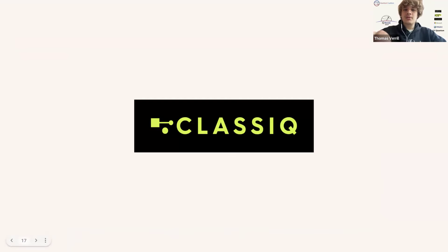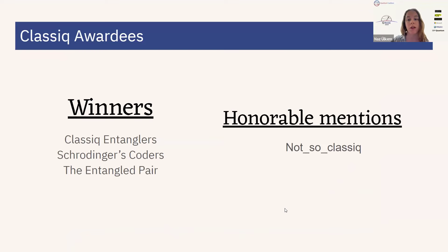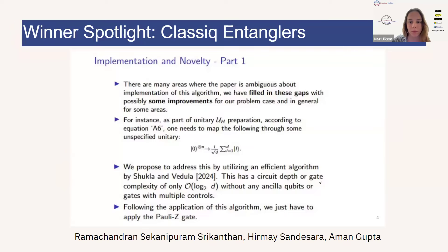Thank you to all the QERA submissions and the participants. Here's Classic. Classic's challenge is for implementing an exponential quantum advantage algorithm. For honorable mentions, we have not-so-classic. And as winners, we have Classic Entanglers, Schrodinger's Decoders, and the Entanglement Pair. This group demonstrated a rigorous understanding of the problem setup and introduced various Hamiltonian simulation techniques, such as Suzuki-Trotter, Q-Drift, and others. Their GitHub was comprehensive, outlining details regarding the explicit construction of the Hamiltonian.